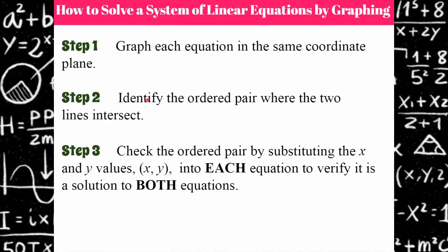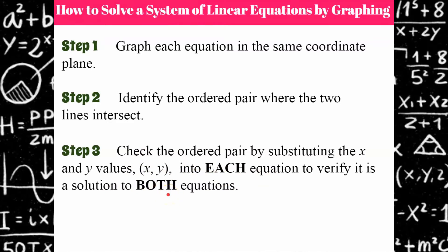Here are the steps to solving a system of linear equations by graphing. Step one: graph each equation in the same coordinate plane. Step two: identify the ordered pair where the two lines intersect. Step three: check to be sure that the ordered pair is true by substituting in the x and y values from the ordered pair into each equation to verify it is a solution to both equations. Step three is a very important check to make sure that you have graphed everything correctly.